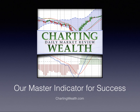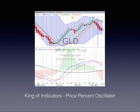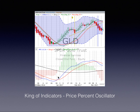At Charting Wealth, we have one master indicator for success, and that master indicator is the price percent oscillator. It is on all of our charts, and we look for signal line crossovers where the blue PPO, or price percent oscillator, crosses over the red signal line. When that happens, particularly on our weekly charts, we call it a weekly vertical crossover.